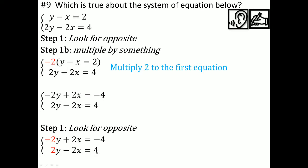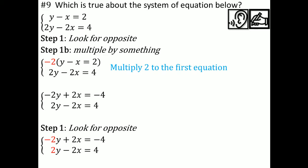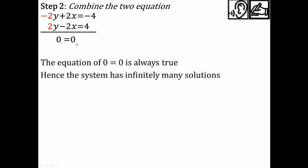Did I multiply by negative 2? Yes. Now look for the opposites — those are opposites, and this is also opposite. Combine the two equations: everything becomes zero. Zero equals zero is always true, so the system has infinitely many solutions. If you graphed it, the lines are right on top of each other.